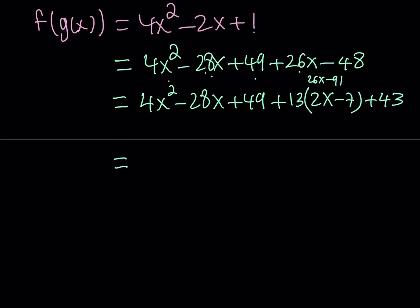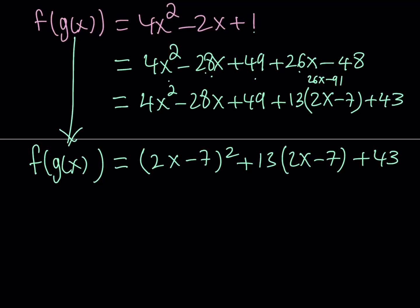Let's go ahead and manipulate a little bit more. So, the first three terms can be written as 2x minus 7 squared. By the way, I could have done that earlier. It doesn't really matter. And then 13 times 2x minus 7 plus 43. Great. So, this is f of g of x. Let's go ahead and rewrite it here.